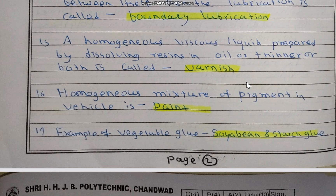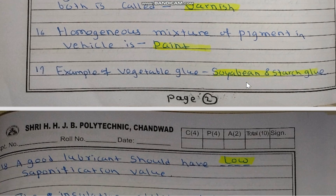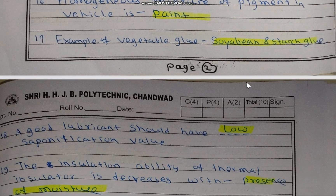A homogeneous viscous liquid prepared by dissolving resin in oil or thinner or both is called varnish. A homogeneous mixture of pigment in vehicle is known as paint. An example of vegetable glue is soya bean and starch glue.